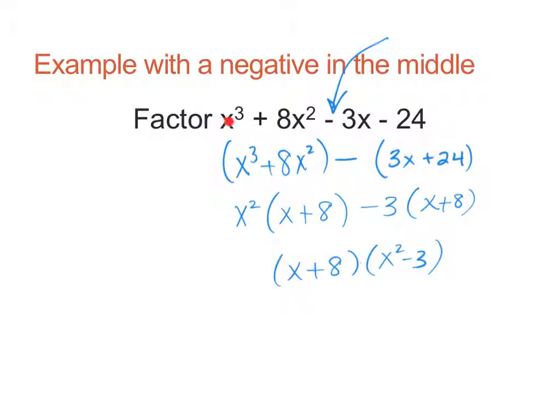So what you need to do is go back to the beginning and rearrange your terms. Maybe if you put the 8x squared here and the 3x here, it will all end up being in the right order.